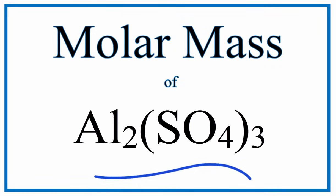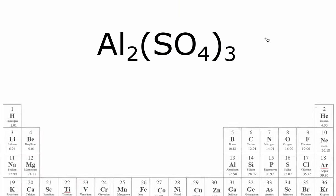To find the molar mass for Al2SO43 aluminum sulfate, let's first find the atomic mass for each element.